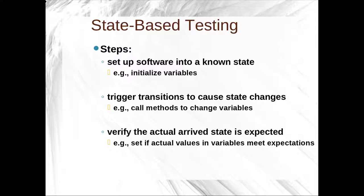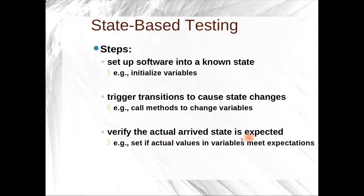One method of testing is state-based testing. To do state-based testing, you set the software into a known state — for instance, you could initialize variables, open a database connection, or set the software into a state that simulates where the user might be. Then, once you're in that state, you trigger transitions to cause state changes: you call methods, you change the variables. Then, once those state changes have occurred, you verify that the actual arrived state is the state that you expected.